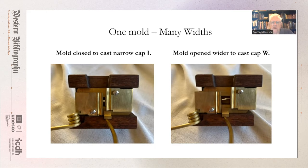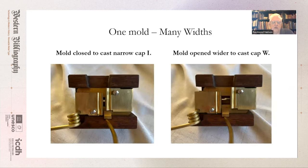Form follows function. Importantly, the type mold offers economy through the rapidity of production, which is absent in most other techniques such as lost wax or sand casting. A hand caster is able to produce several types a minute, and it is this feature of rapid, precise production that is a critical advantage of the type mold.